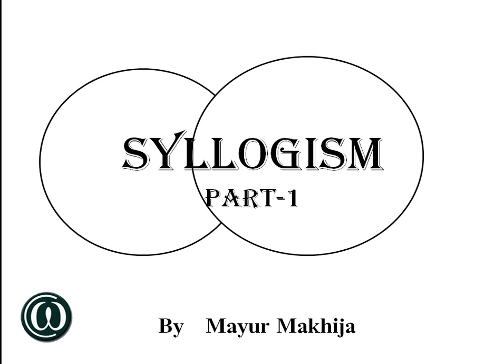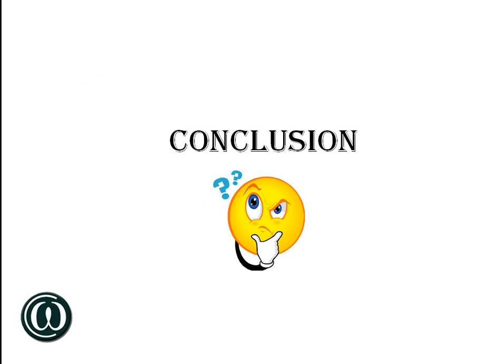Coming back to the chapter, Syllogism. Understand that it is divided into two different segments: one is the statement and one is the conclusion. We will directly jump into examples. Let's forget everything else and see live examples — we will understand statement and conclusion through examples.